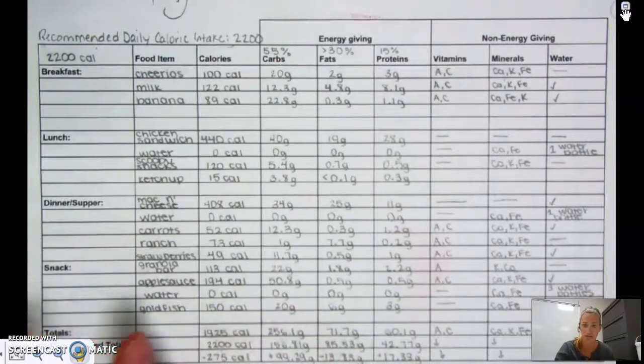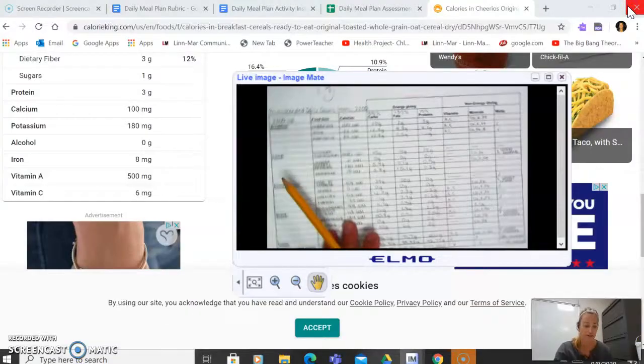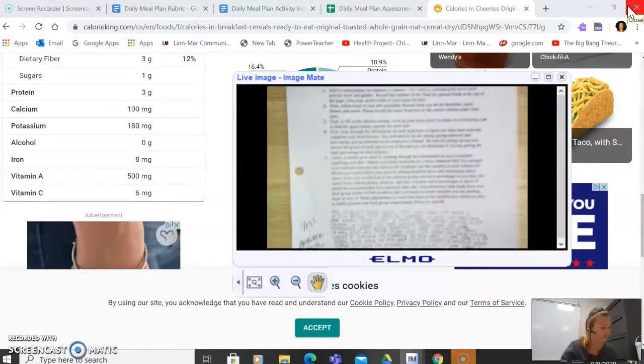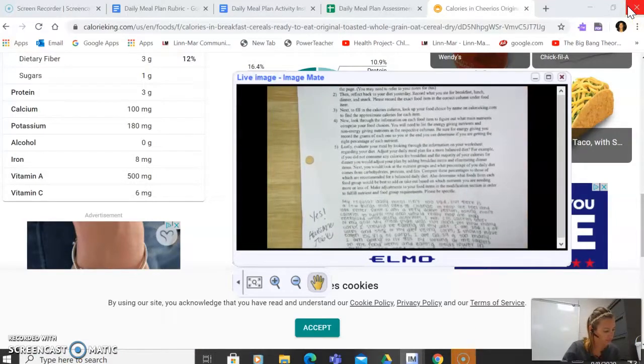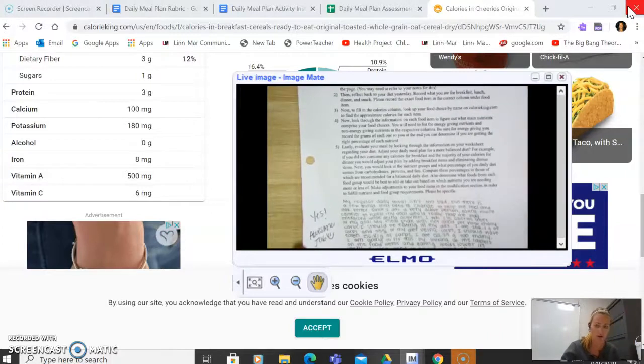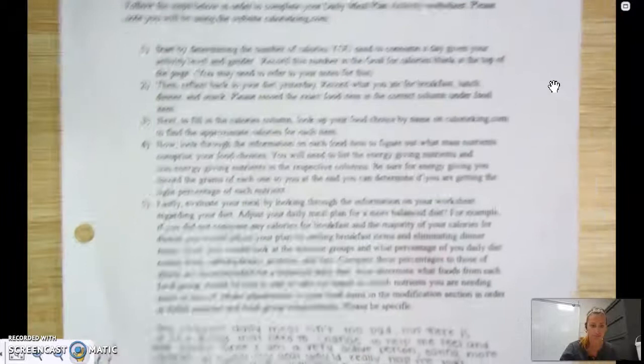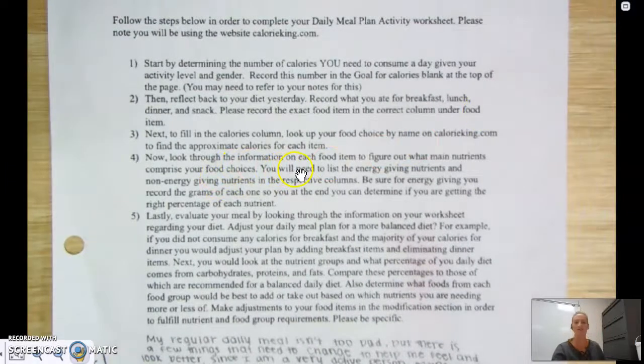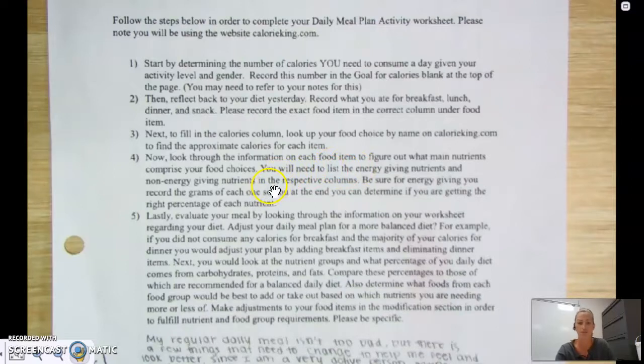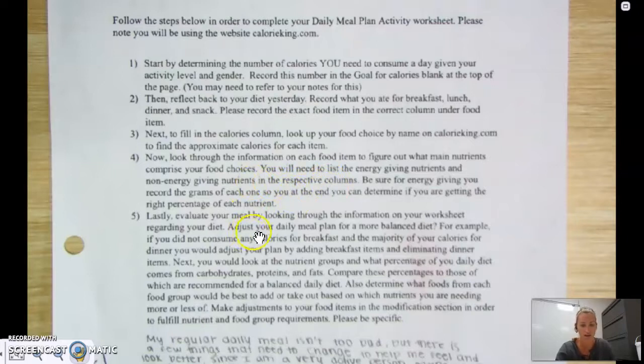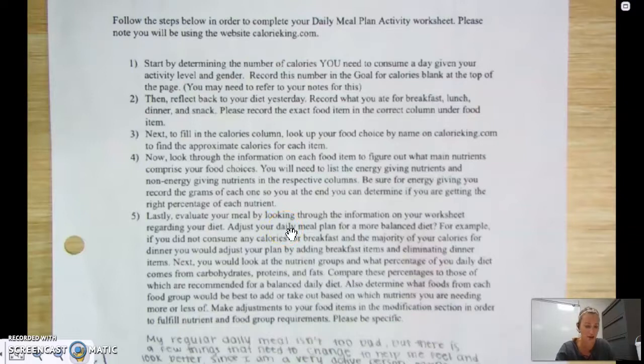Okay, when you have filled this chart completely out and done all your totals, you will look through and figure out, just going back to your instructions here. You will look through your information and figure out what main nutrients comprise your food choices, you will list all that, we already talked about that. You will look through and talk about what you need to adjust. Okay, so if your total calories need to be adjusted, where do you need calories at? Do you need more carbs? Do you need more fats? Do you need more proteins? You have to look at all of the sections that you have filled in, okay?